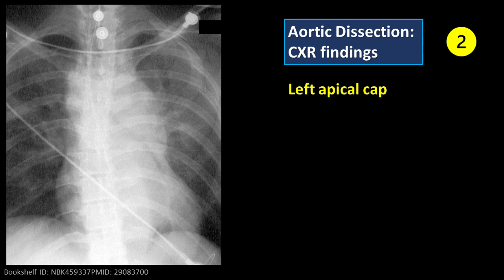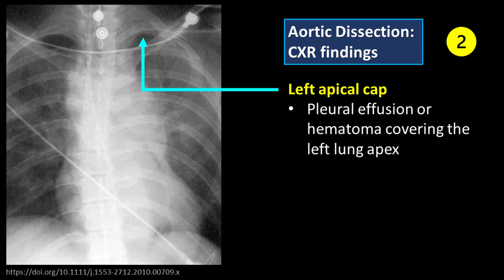Feature number 2: Left apical cap. Left apical cap refers to pleural effusion or hematoma covering the apex of the left lung.